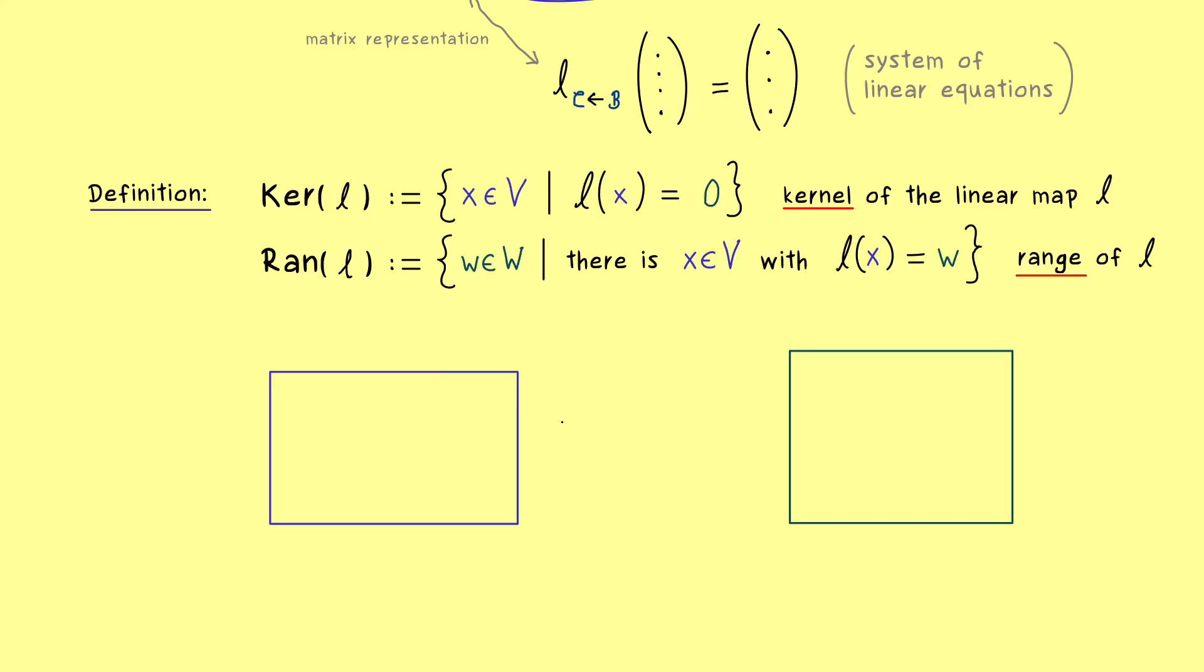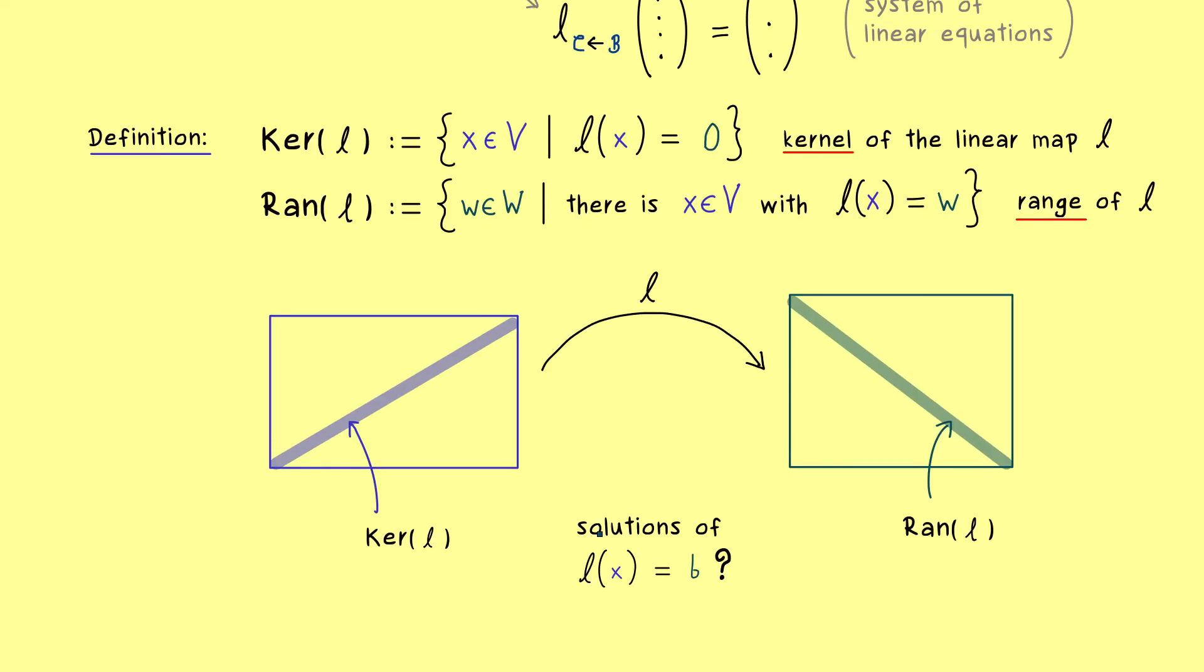Similarly, it's not hard to show at all that the kernel and the range form subspaces. The kernel has to be a subspace on the left hand side in V and the range is a subspace in W on the right hand side. So again in this picture we can ask about solutions of the linear equation lx = b. Obviously, if b does not lie in the range of l on the right hand side then we don't have a solution at all. So please remember that knowing the range tells us about the existence of solutions.